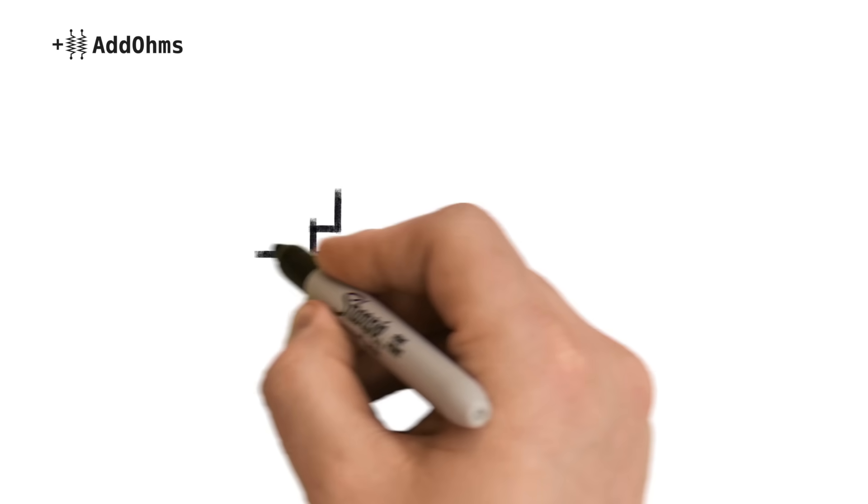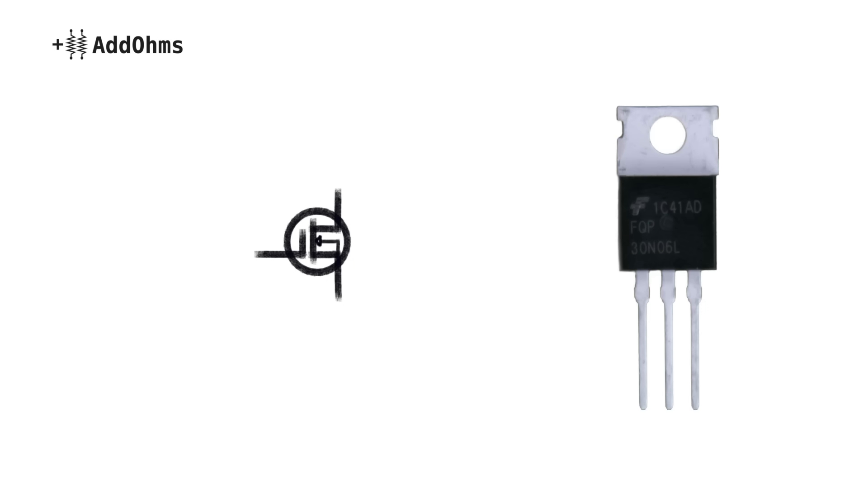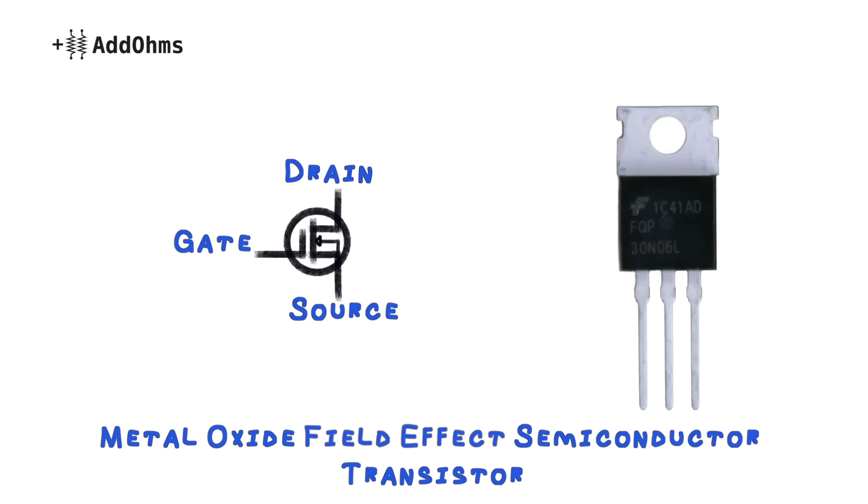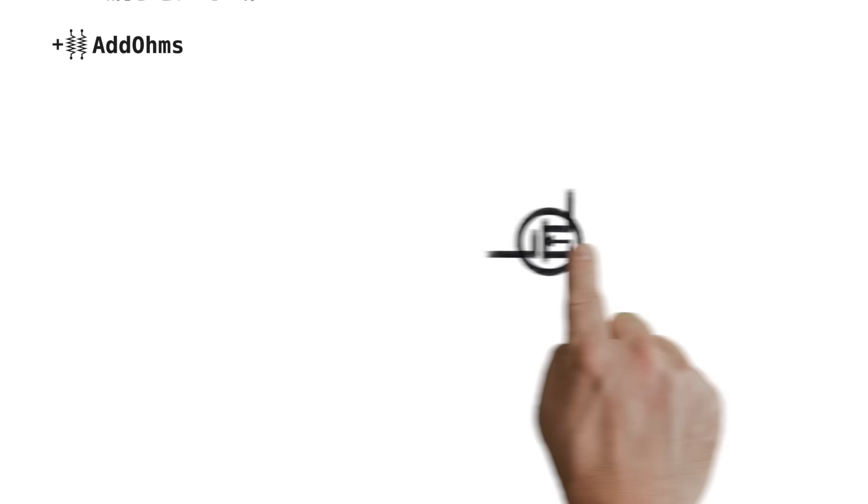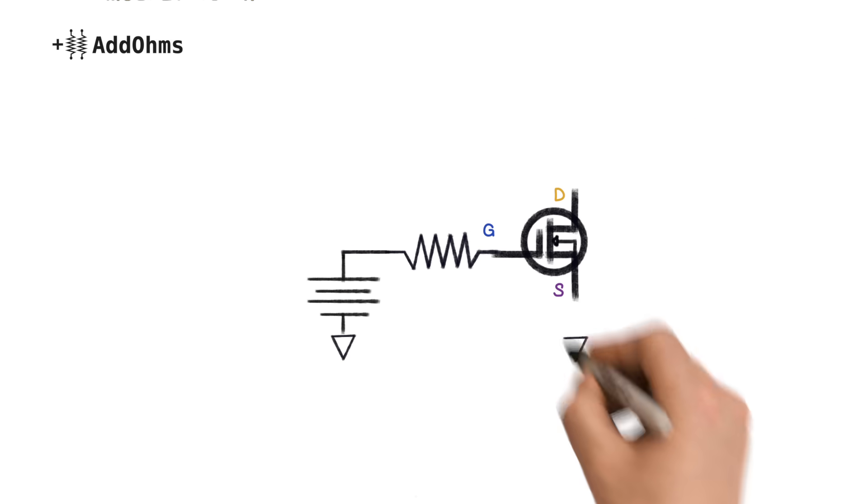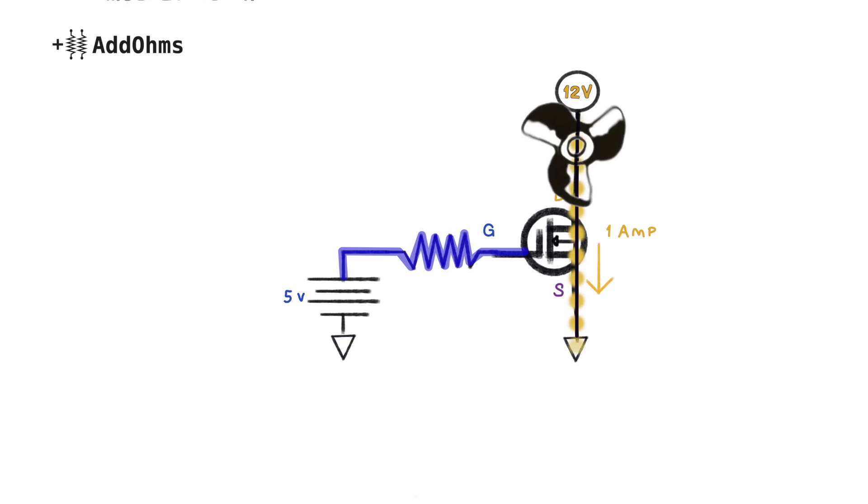Here's the symbol for an N-channel enhancement mode MOSFET, and here's a TO220 style transistor. The pins of a MOSFET are identified as the gate, the drain, and the source. The field effect part of their name suggests they work by voltage, compared to a BJT which works by current. When voltage is applied between the gate and the source, current is allowed to flow between the drain and the source.